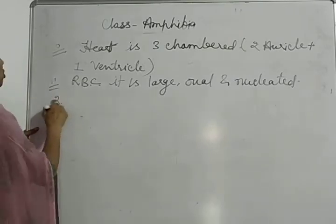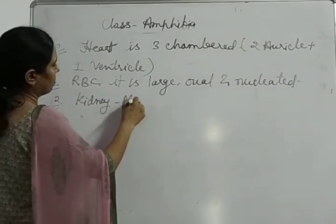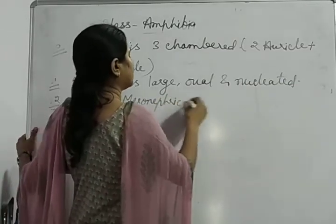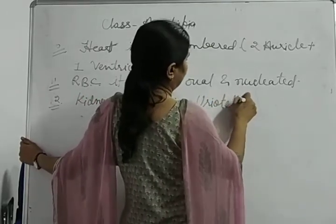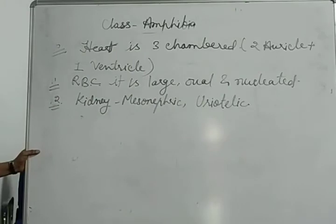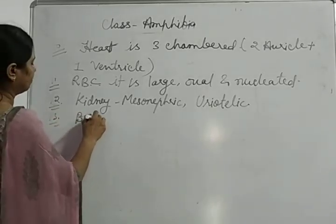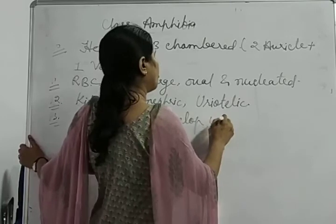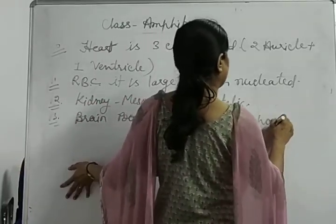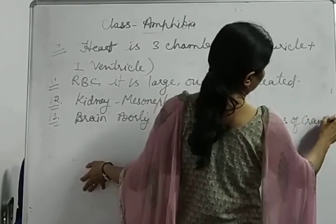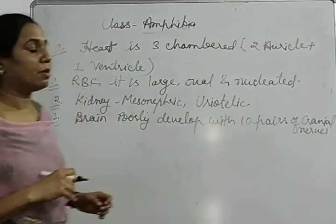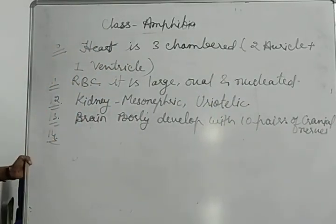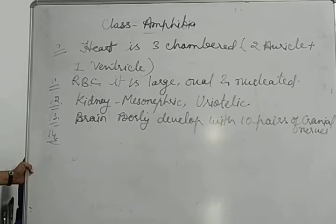The kidney is mesonephric. The animal is ureotelic, meaning nitrogenous waste is excreted in the form of urea. The brain has 10 pairs of cranial nerves, and the spinal cord gives rise to spinal nerves.